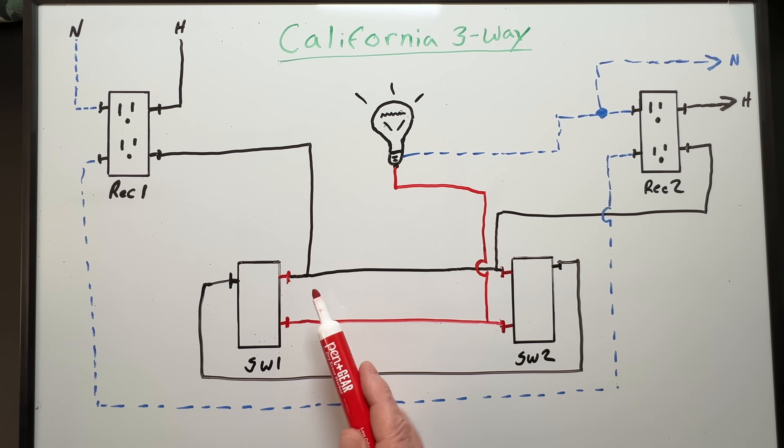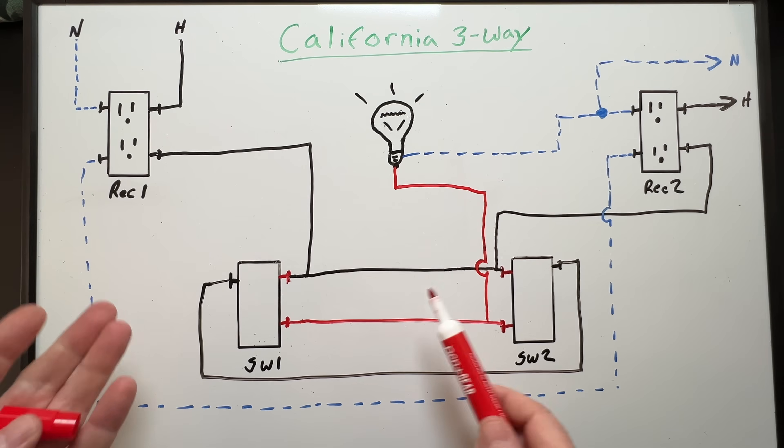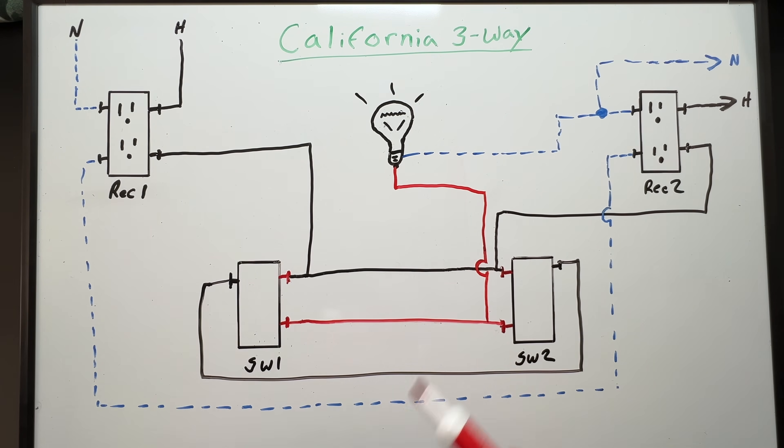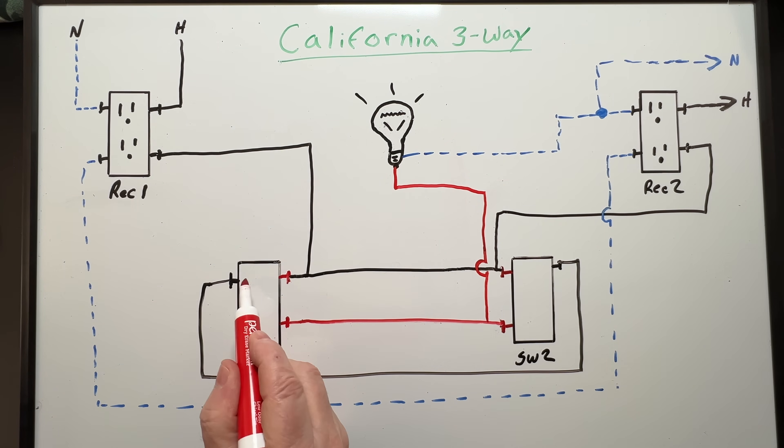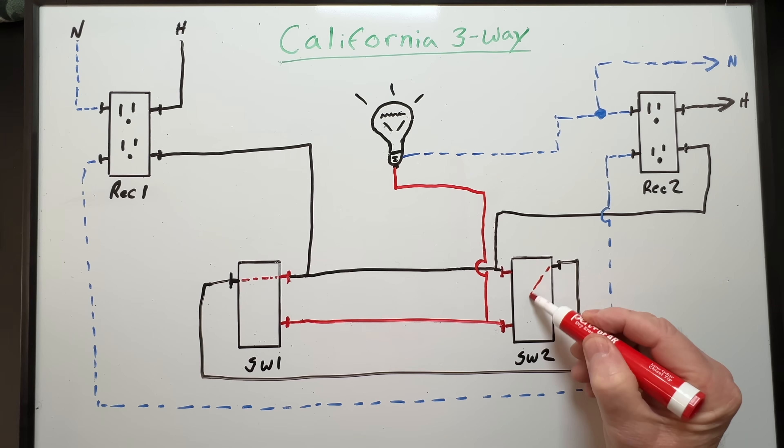Okay, now I'll show you how the California three-way actually works. Three-way switches work by connecting our black common screw to one of our gold traveler screws depending on the position of the switch. Let's see what happens with our four possible switch positions. Let's start out with switch one in the up position and switch two in the down position.